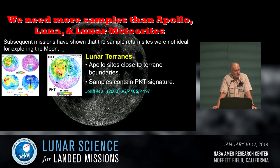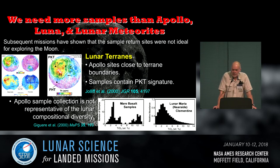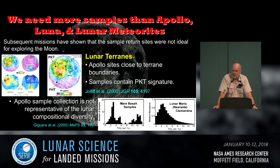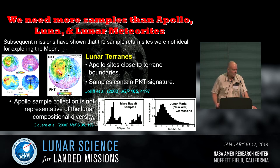The Soviet lunar missions were on the eastern limb of the near side and were a little more free of that material, but they didn't exactly bring back as much as Apollo. The Apollo sample collection is not representative of the types of materials actually present on the surface. We are now getting more and more lunar meteorites — we know they come from the Moon — but where on the Moon becomes a bit of a game to play, and these meteorites are subject to terrestrial weathering and alteration.